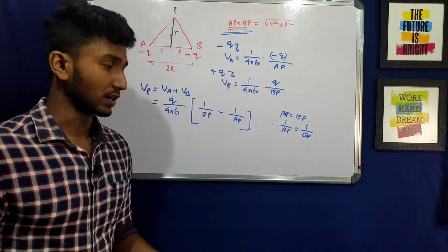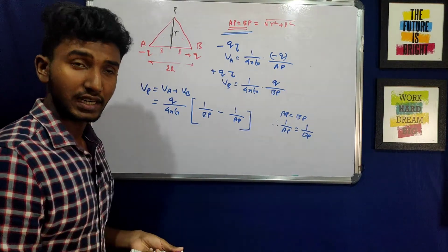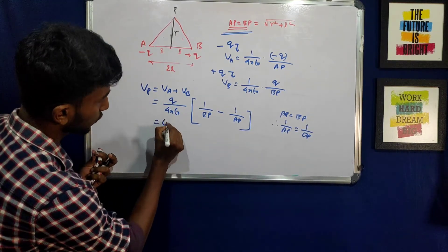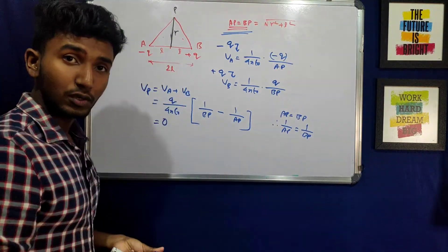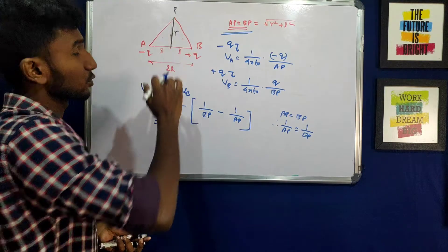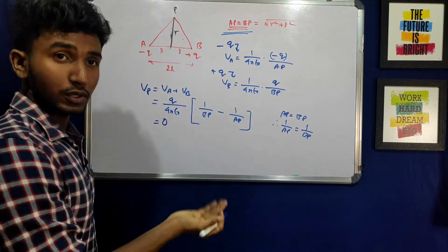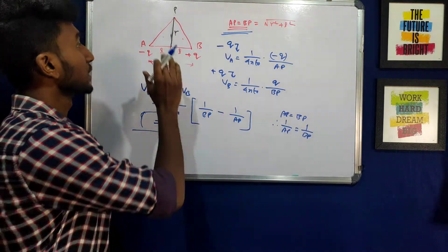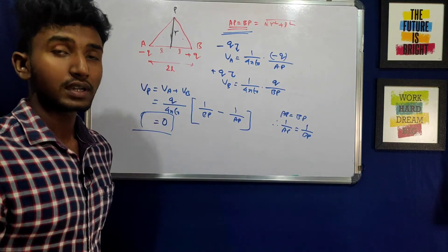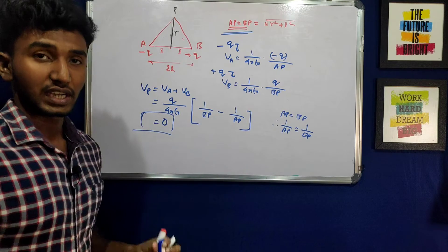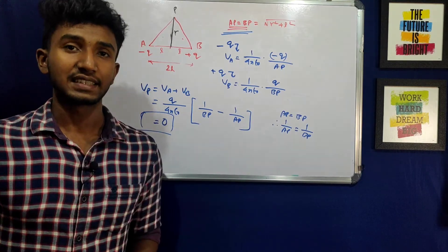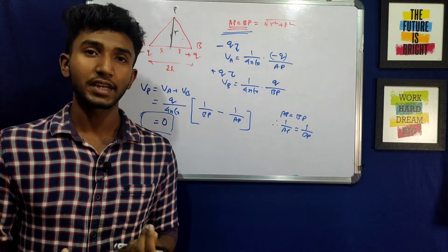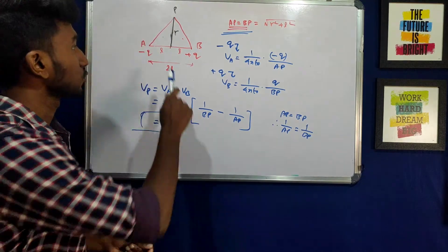If AP is equal to 0, then BP gives the potential: q by 4 pi epsilon naught into 0. So the electric potential at this point equals 0, meaning when AP equals 0, the potential becomes zero at that location.